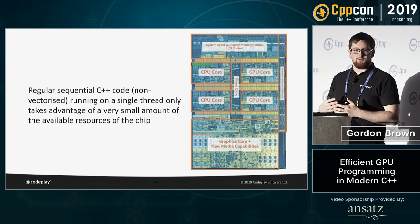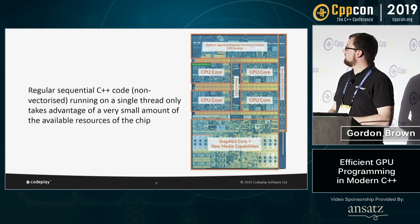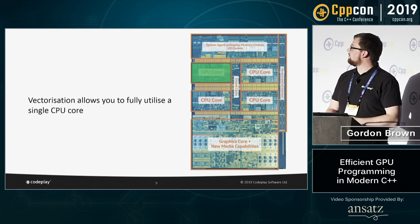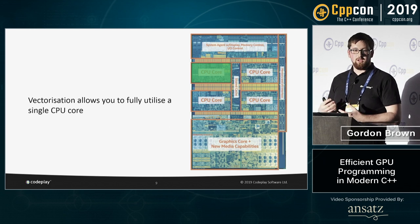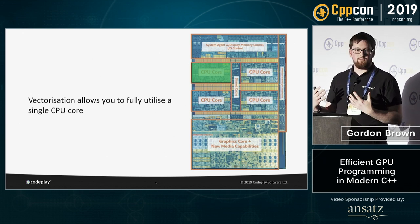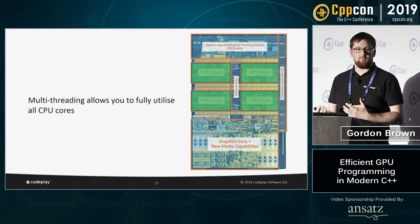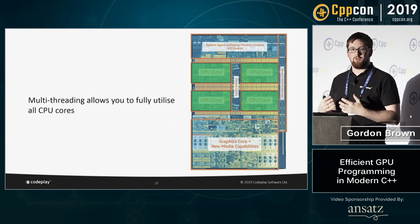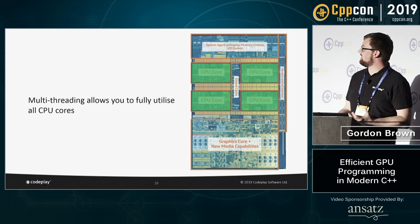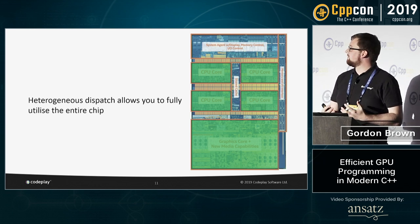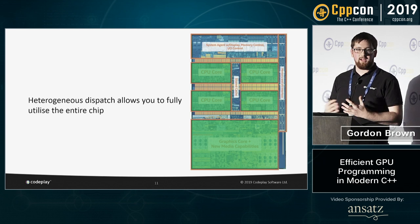If you write regular C++ code — non-vectorized, running on a single thread — you're not taking advantage of the full potential of the chip; in fact, a very small amount of it. You can vectorize using inline assembly, OpenMP, or other libraries to take advantage of a whole core, then use multi-threading to use all CPU cores, and then use heterogeneous dispatch to also take advantage of the GPU — using everything.